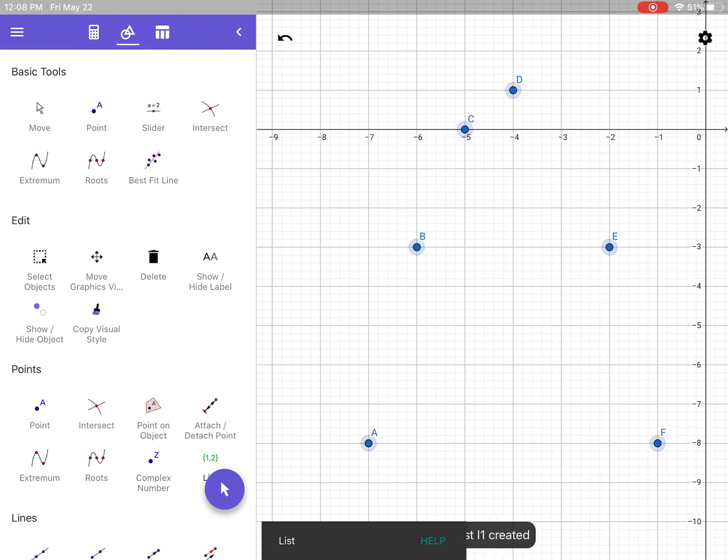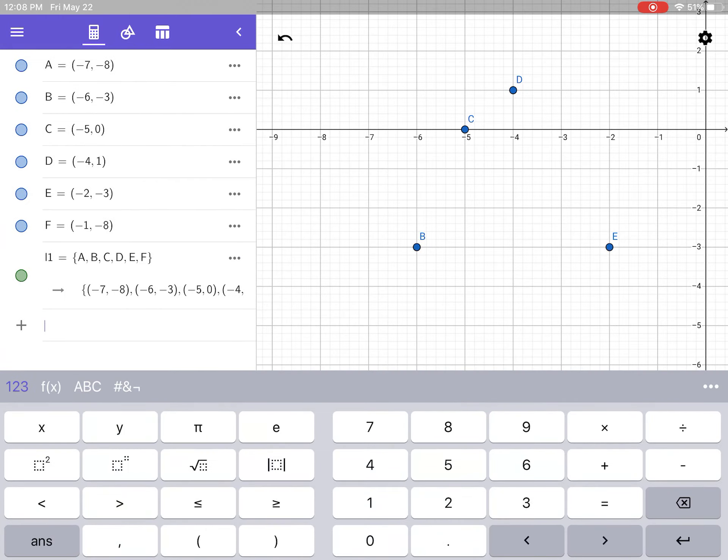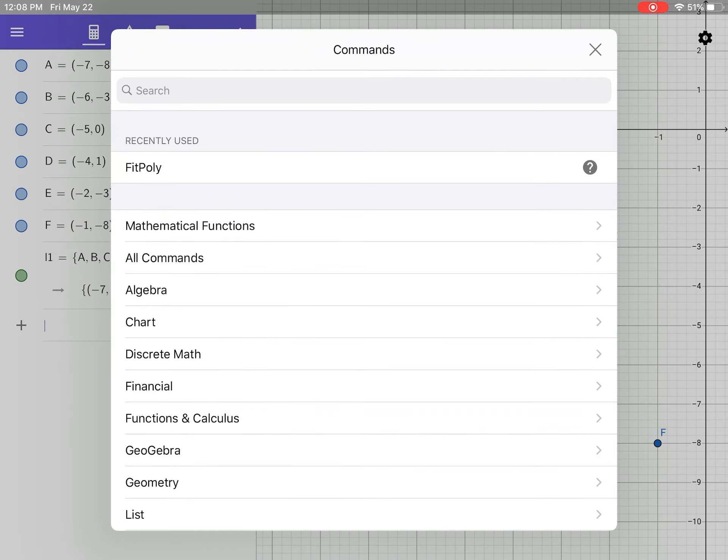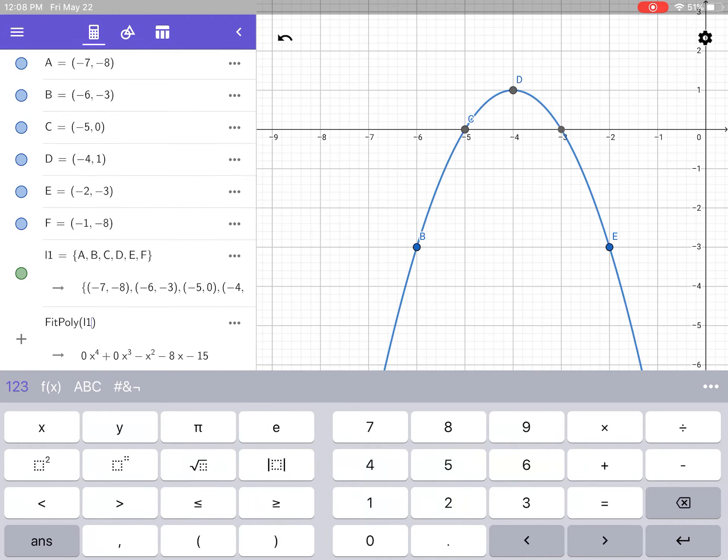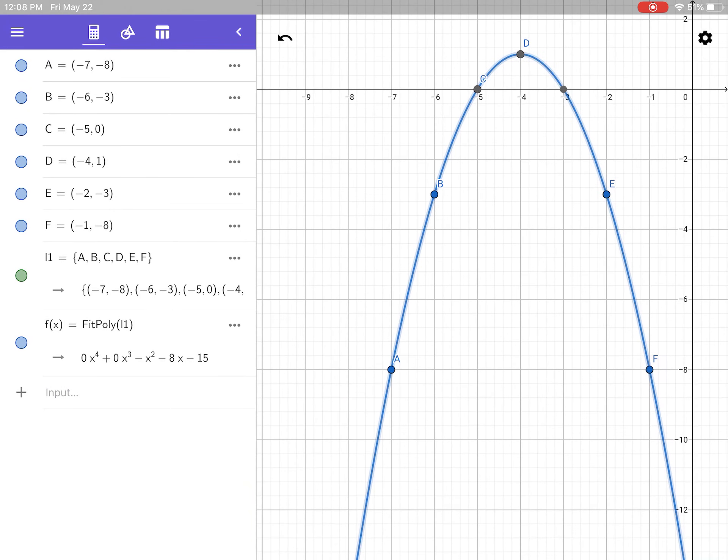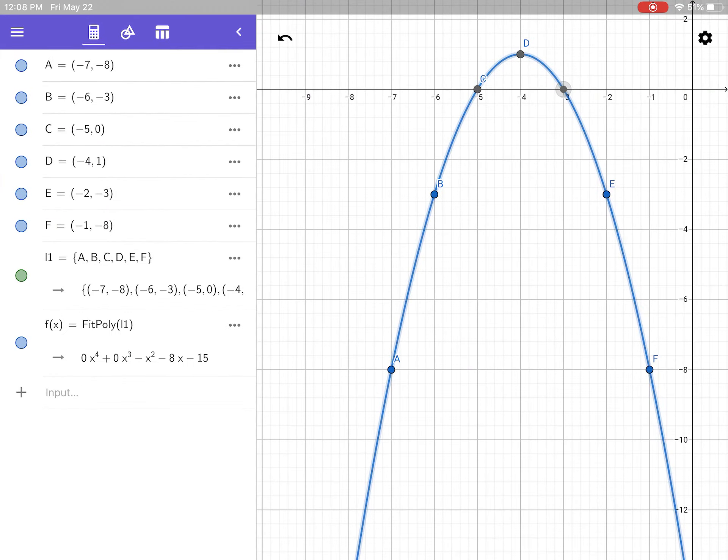Zoom to fit. Now we're going to create a list. Circle triangle, list. Drag and let go. Your list is created. Now let's do the fit poly. You could type it in but it should be there if it was the last thing you used. L1, enter. There's my parabola for that set of points. I first look at the roots: negative 5, negative 3. There's my roots.